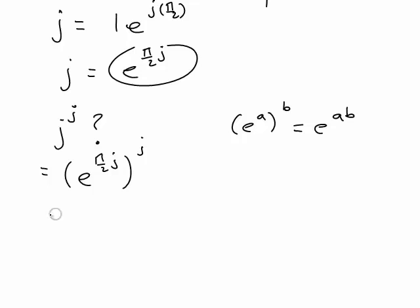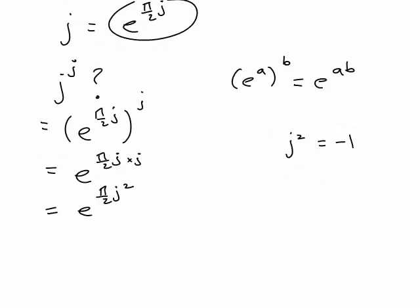Therefore j to the power of j becomes e to the pi on 2 j multiplied by j, which becomes e to the pi on 2 j squared. But we saw that j squared is just equal to negative 1. So therefore j to the power of j is e to the power of pi on 2 times negative 1, which is e to the negative pi on 2 — and interestingly, you'll notice this is a real number.